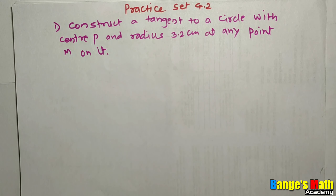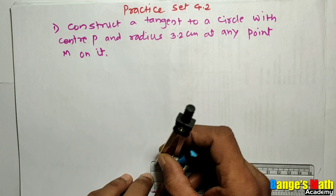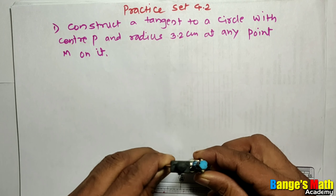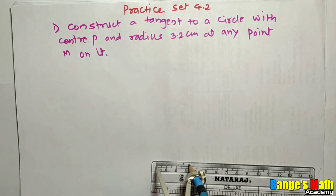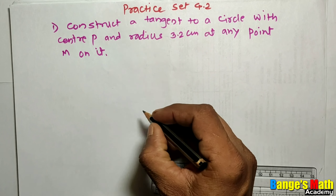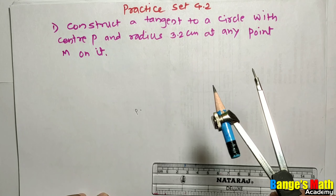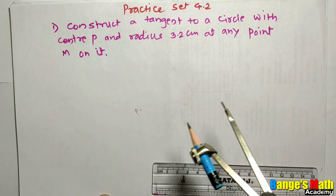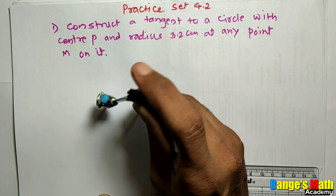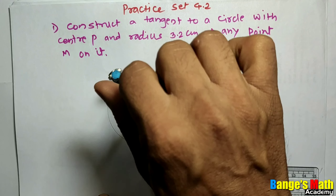The radius of the circle is 3.2 cm. With the help of a ruler, take distance 3.2 cm in your compass. The center of the circle is point P. Put the still point of the compass on point P and draw a circle with radius 3.2 cm.